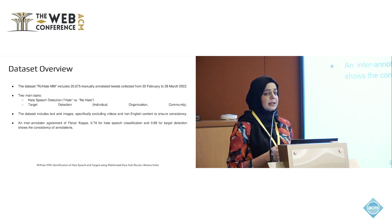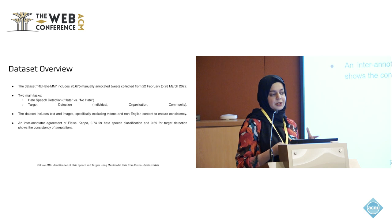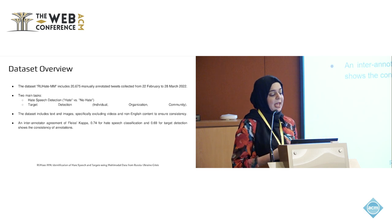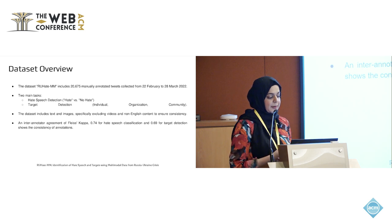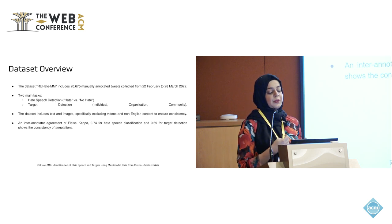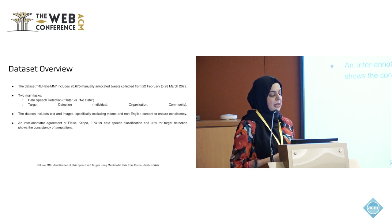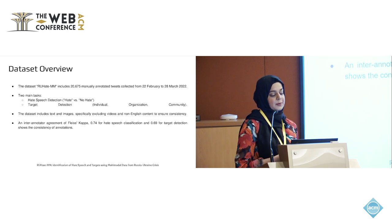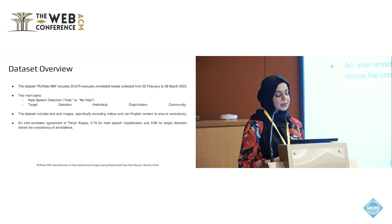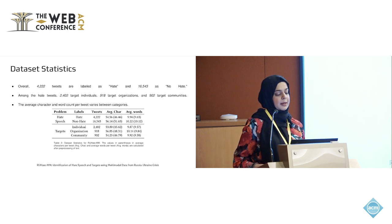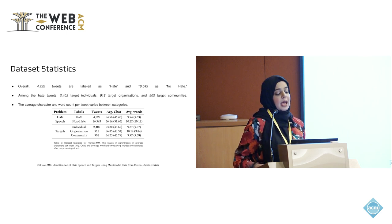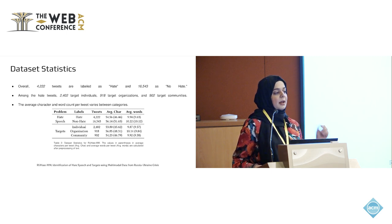When we annotated the dataset, there were two main tasks: to find out hate speech — two classes, hate speech or no hate speech — and also to detect the targets of that hate speech, which could be an individual, an organization, or a community. The dataset includes text and images, specifically excluding videos and non-English content to ensure consistency. An inter-annotator agreement of Fleiss' Kappa 0.74 for hate speech classification and 0.69 for target detection shows consistency in the annotations. Overall, there were 4,222 tweets labeled as hate and 16,543 as non-hate speech tweets. Among the hate tweets, 2,402 target individuals, 918 target organizations, and 902 target communities.